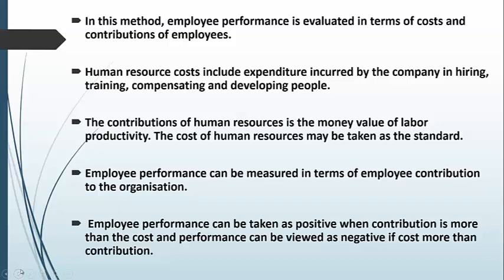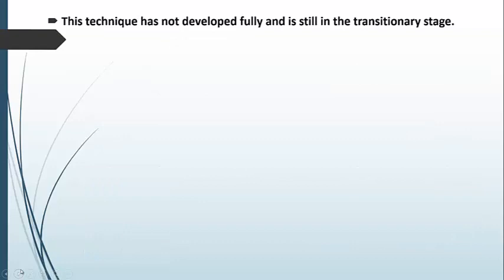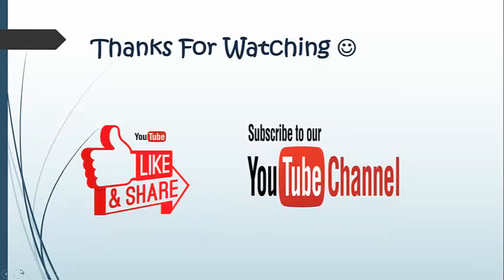In simple HRA terms: cost is what is incurred to hire, train, compensate, and develop the employees, and contribution is what the employee has made towards the organization. You compare these two. Positive performance means contribution is greater than cost, and negative performance means cost is greater than contribution. It is not fully developed — it is still in a transitionary stage. So this was our Human Resource Accounting. I hope you will like this video. Share and subscribe to my YouTube channel. Thanks for watching.